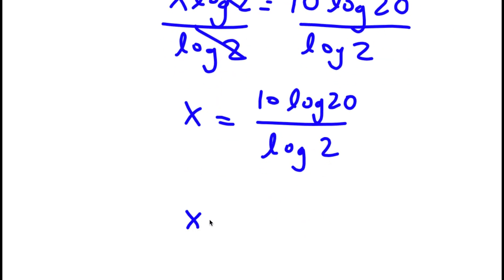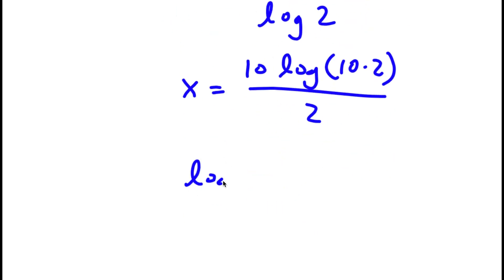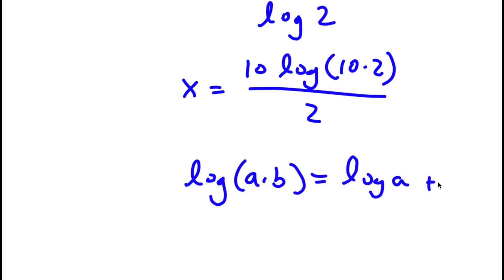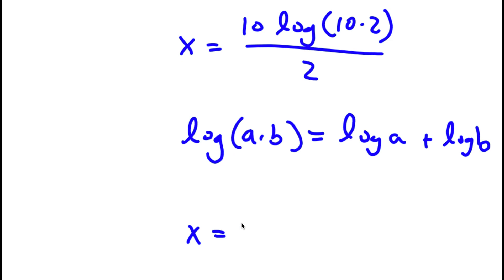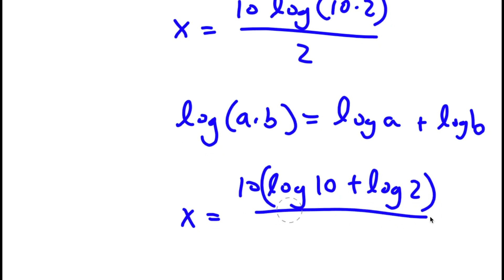Now log 20 — I'm going to rewrite that as log of 10 times 2. And if I have something in the form log a times b, that's simply equal to log a plus log b. So log 10 times 2 becomes log 10 plus log 2, and I still have this over log 2.